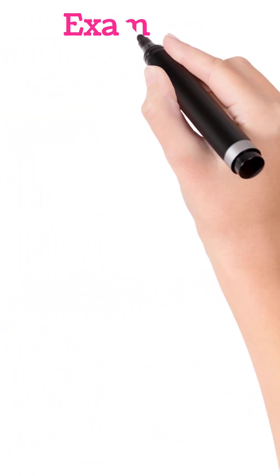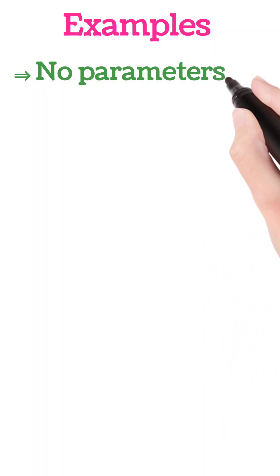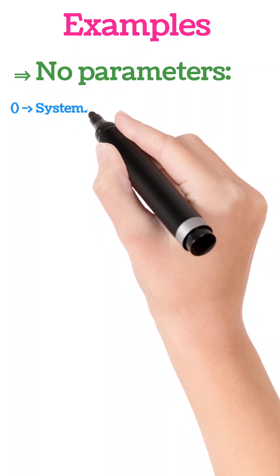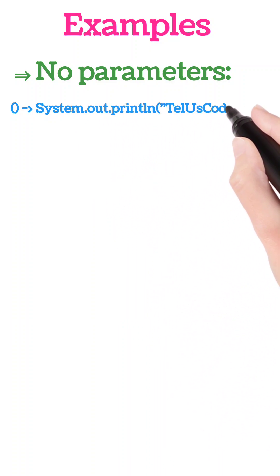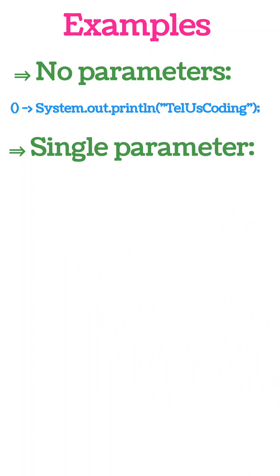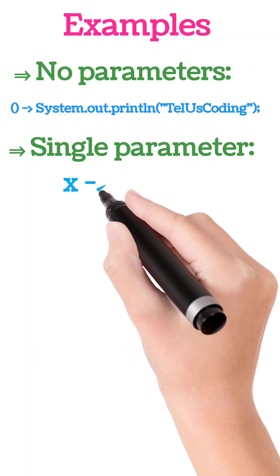Let's see examples. First example for no parameter: we write parentheses, arrow token, and System.out.println like TellUsCoding. For single parameter, suppose x, and we want to return the product of that x, so we can write x, arrow token, and x times x.